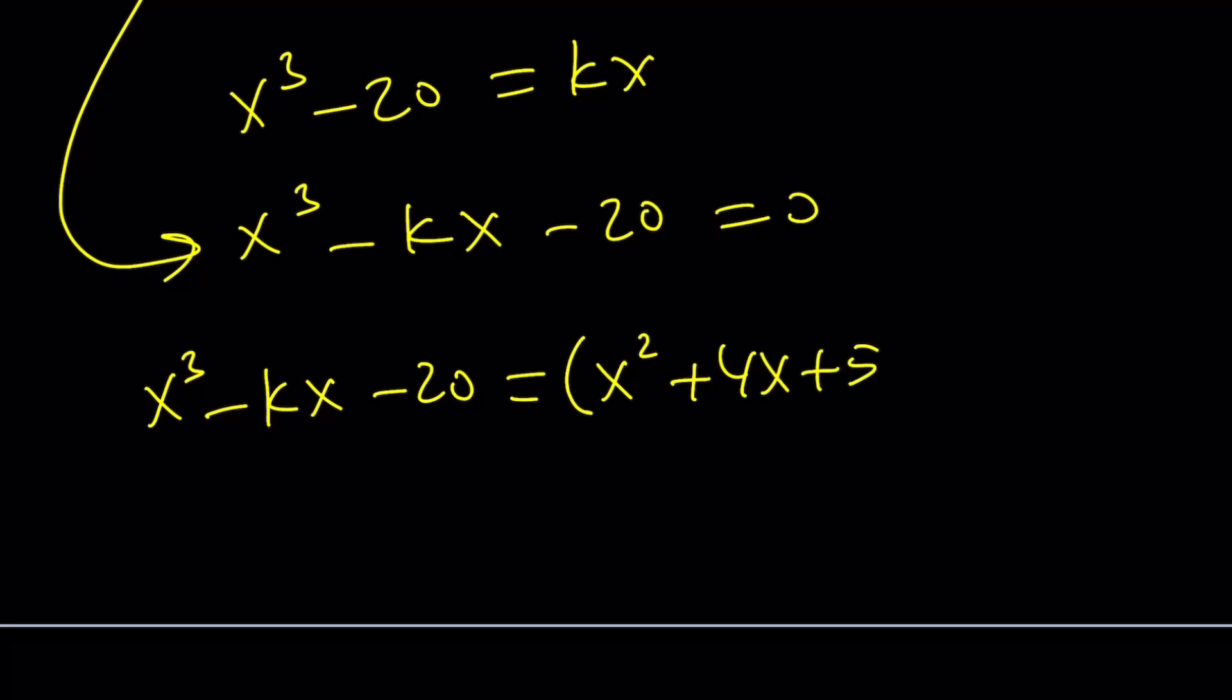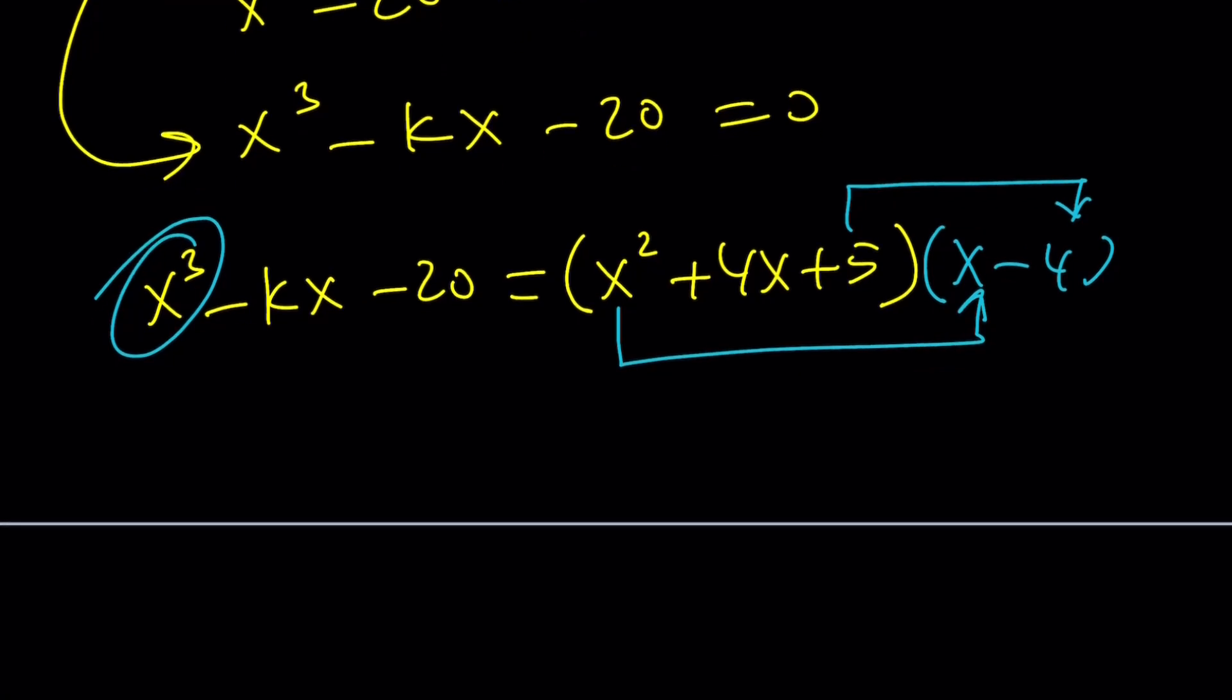x cubed minus kx minus 20 contains x squared plus 4x plus 5. The other factor is x minus 4, because I need negative 20. To get negative 20, I need to multiply 5 by negative 4. Let's distribute everything. We get x cubed minus 4x squared plus 4x squared minus 16x plus 5x minus 20.